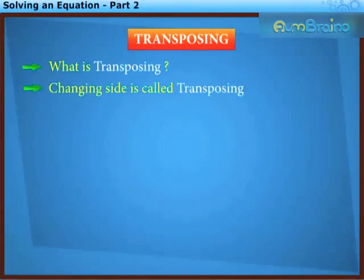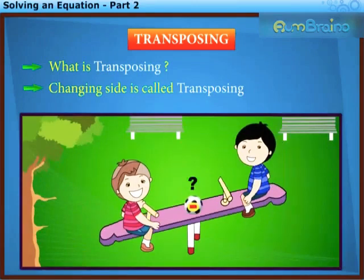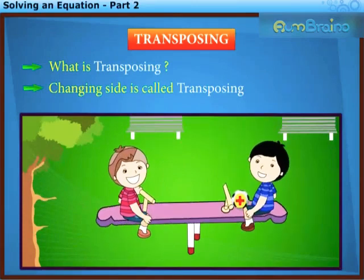Now let us understand what is transposing? Changing side is called transposing. Transposing a number means moving it from one side to the other. While transposing a number, we change its sign. Let us now see how we can use this method for solving an equation.